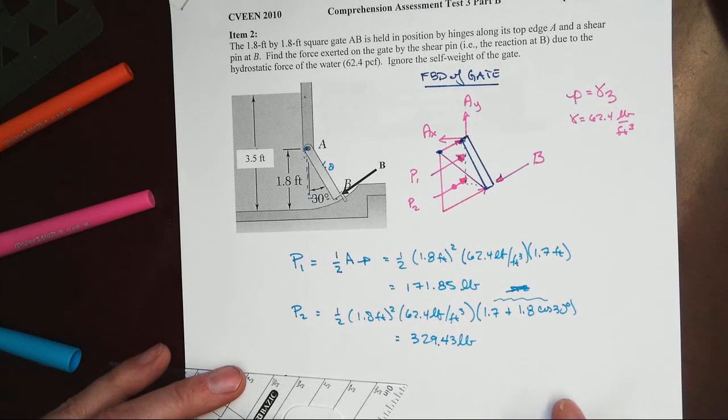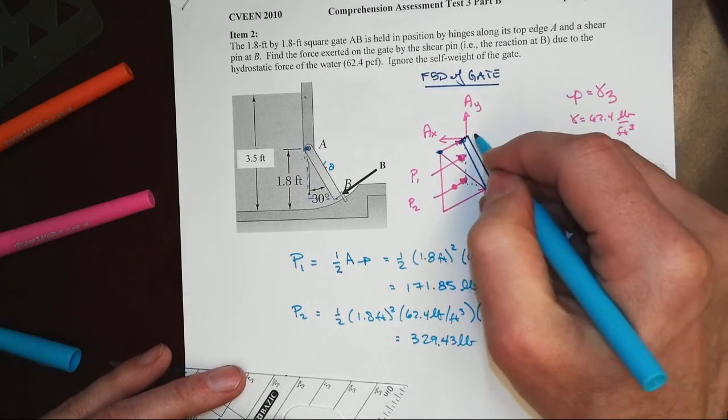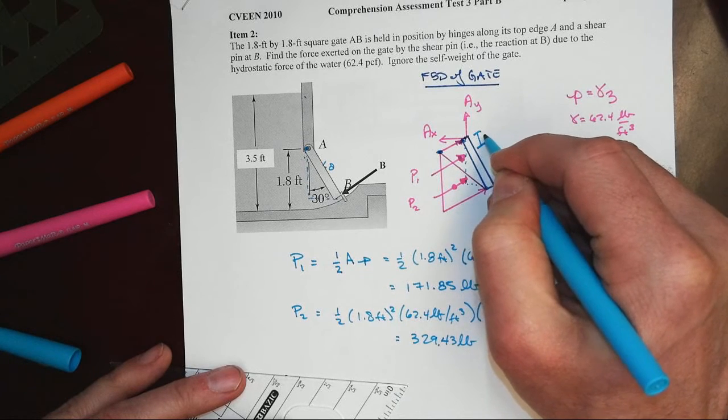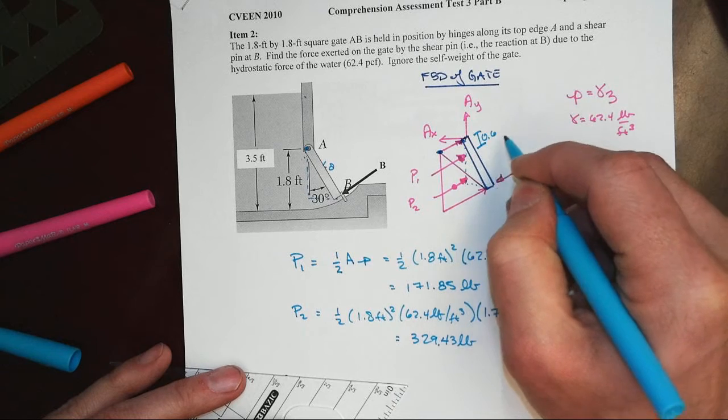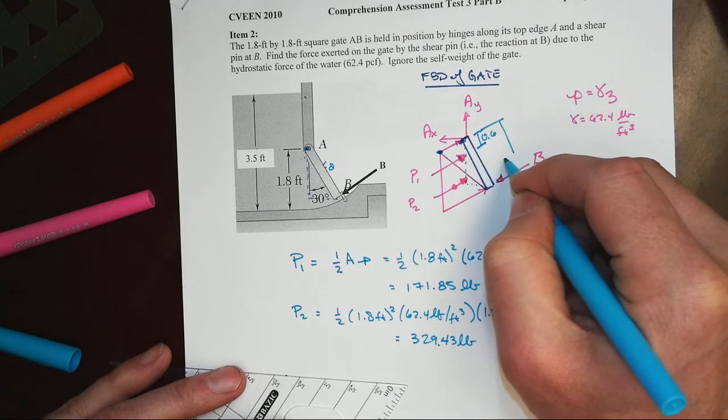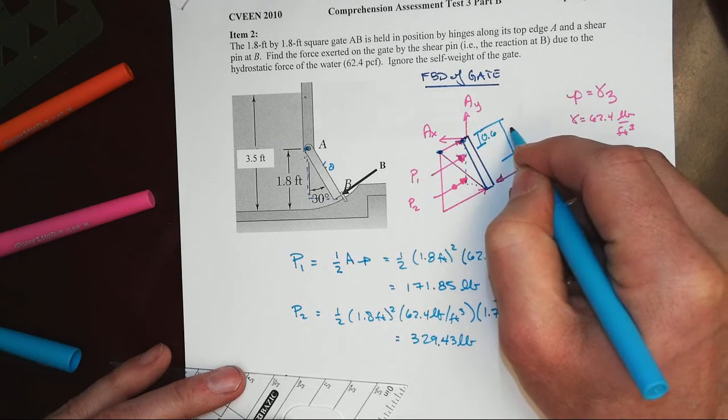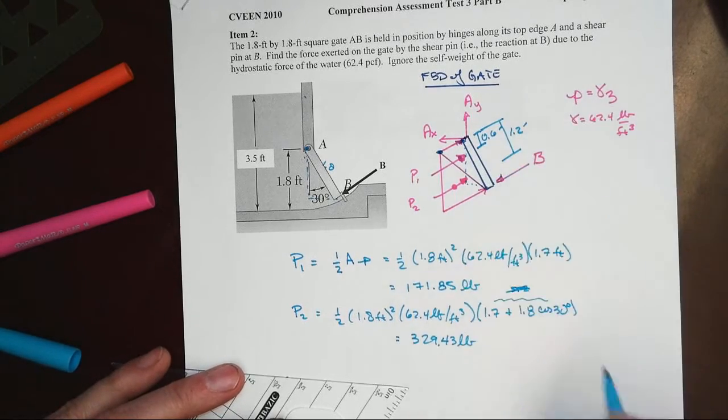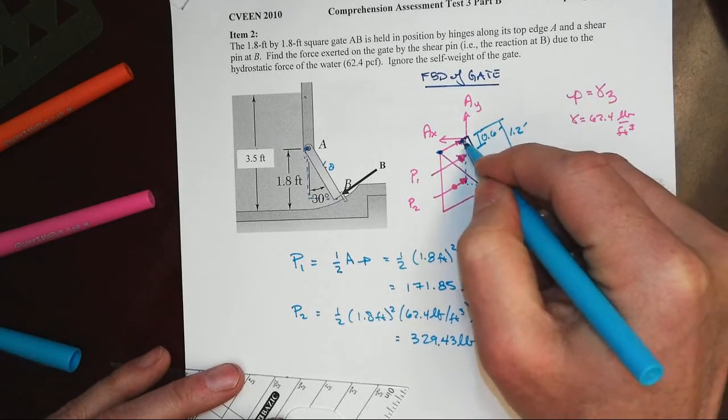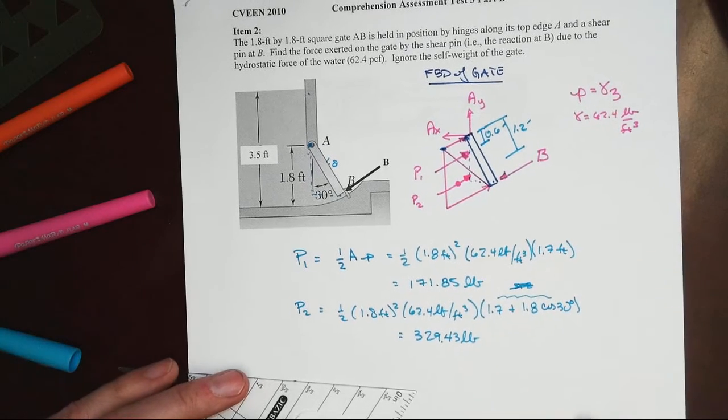That's the magnitudes. They're moment arms. Since they're at the third point of 1.8, that is going to be 0.6 for that one. And then the two-thirds point for the other one, that's at 1.2 feet there, because remember this whole thing from here to here is 1.8 feet.